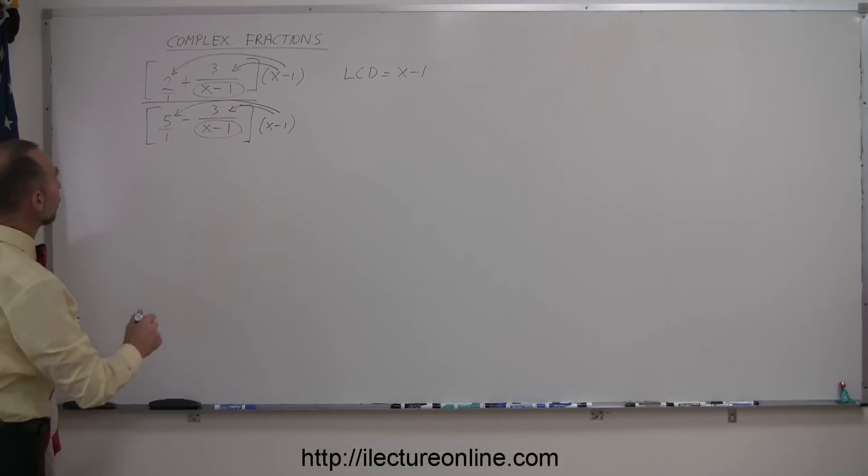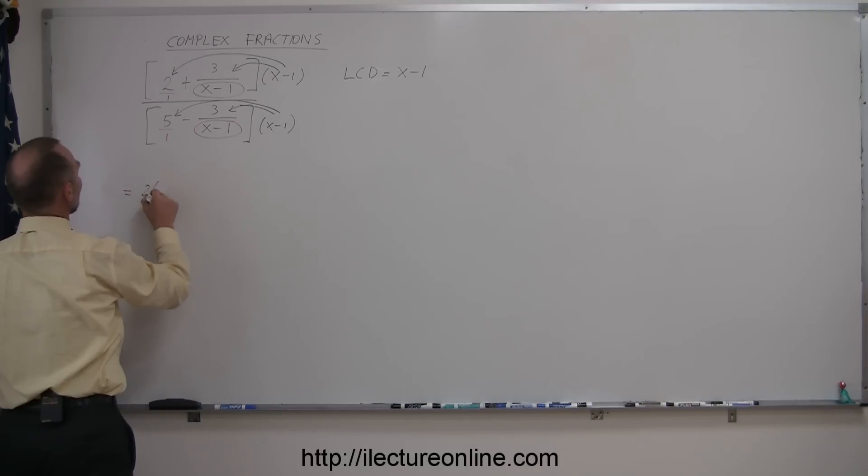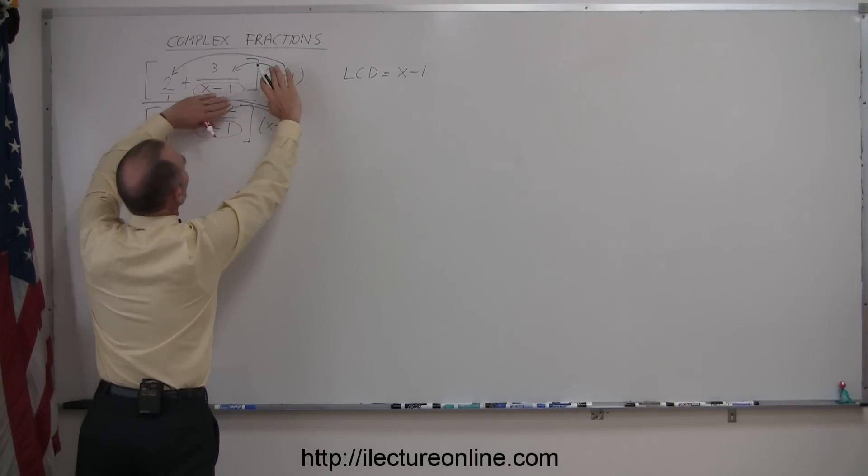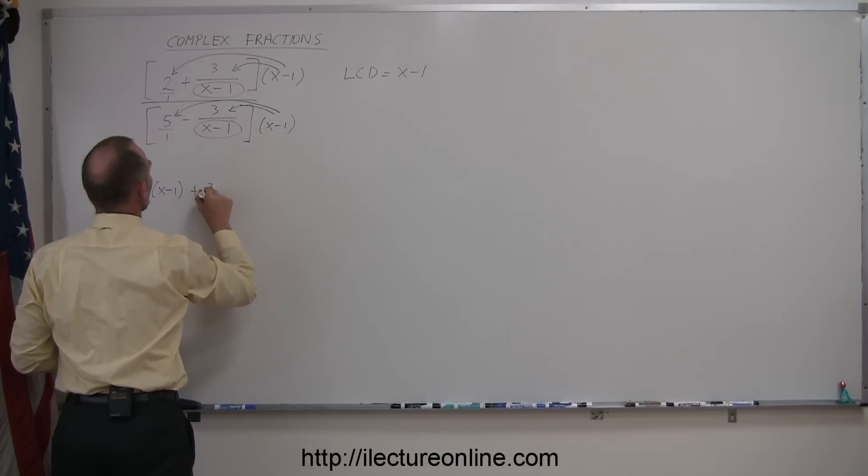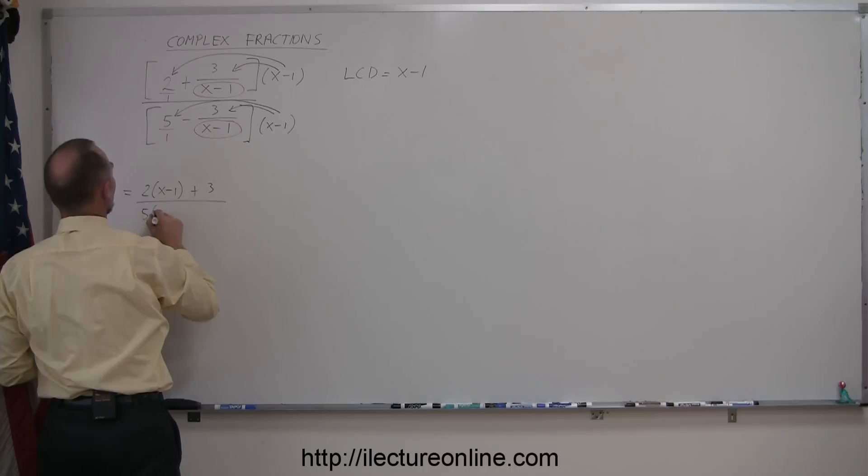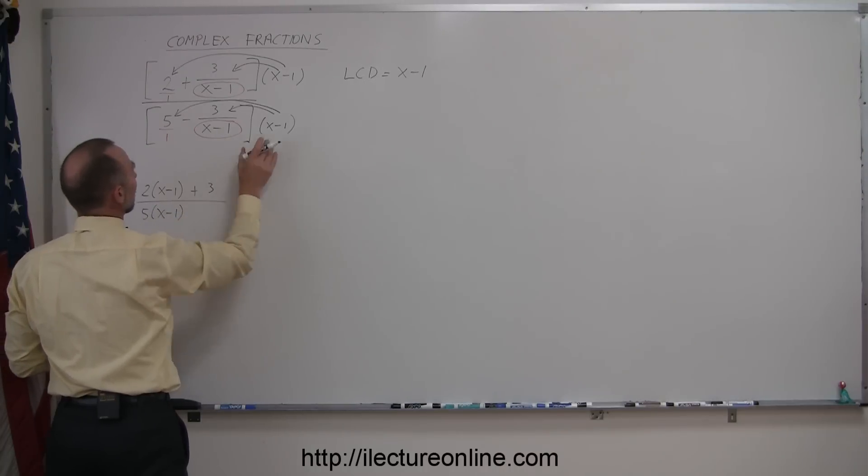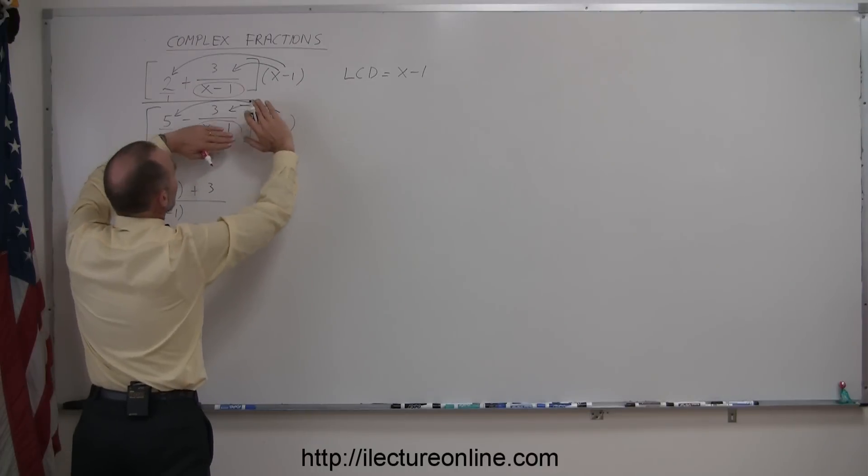So in the numerator we get 2 times x minus 1, and we multiply this times this. Notice that the denominators will cancel out and I'm left with a plus 3. In the denominator, when I multiply this times this, I get 5 times x minus 1. When I multiply this times this, those will cancel out and I'm left with a minus 3.